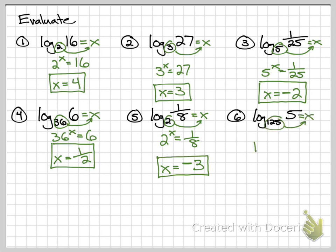125 to what power equals 5? You should know that 5 cubed makes 125, so if I'm trying to make it smaller, I'm going to use 1 third. The cube root of 125 is 5.